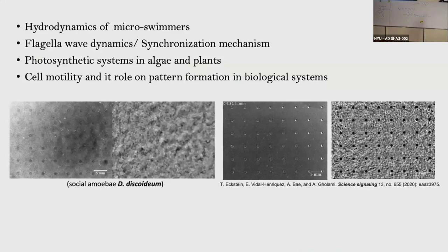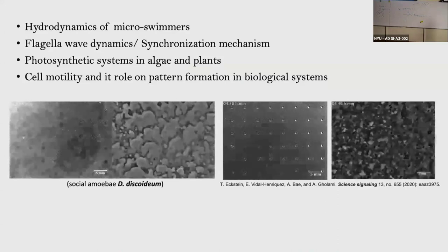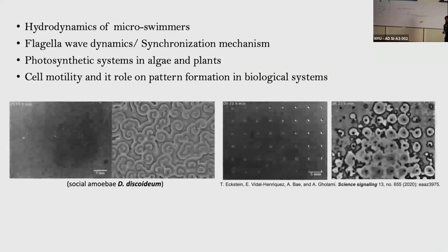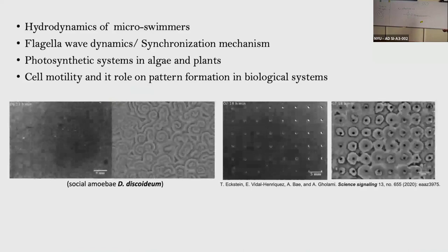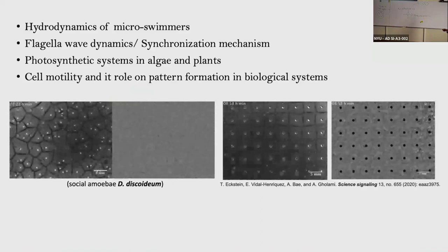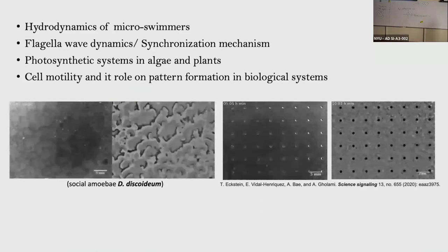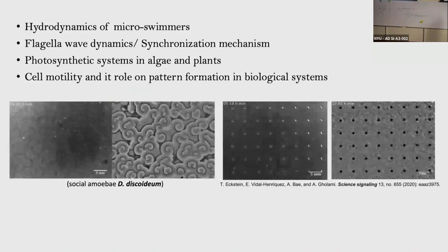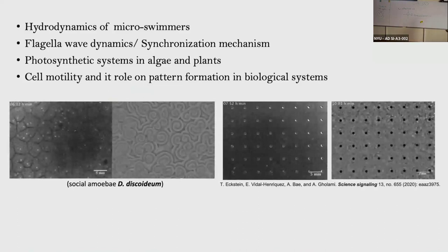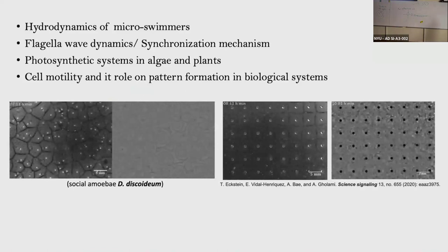Here I show one example where we work with social cells and expose them to spatial heterogeneities. You see these multiple spiral patterns. Depending on the initial conditions, you can have situations where cells completely ignore the obstacles, or if you change those conditions, the obstacles become wave centers and cells start to stream towards them, forming beautiful coronoid domains that reflect the periodicity of the underlying lattice.